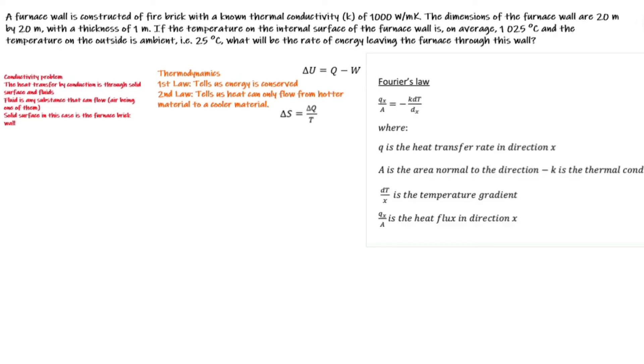To solve this example, we are going to make use of Fourier's law given by this equation where Q is the heat transfer rate in the direction X. A is the area normal to the direction. K is the thermal conductivity measured in watts per meter Kelvin. DT over X is the temperature gradient and QX over A is the heat flux in the direction of X.